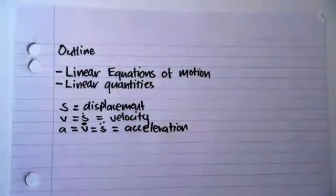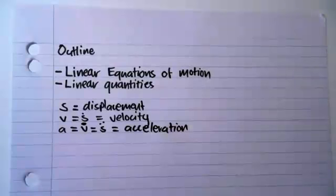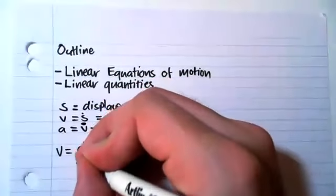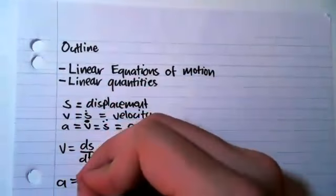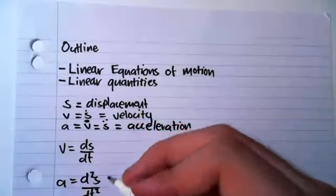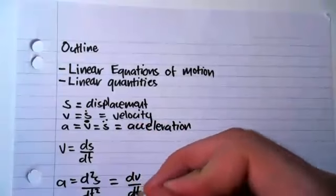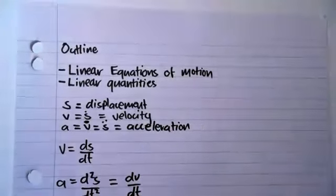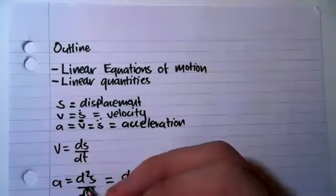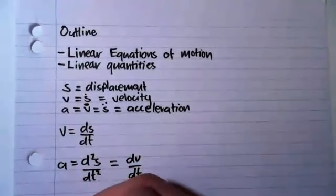Now those can be expressed as differential elements divided by differential elements with respect to time. So we can have V equals dS/dt, A equals d²S/dt², which is also equal to dV/dt, which is very important for deriving our equations of motion. So without further ado, we'll get into our equations of motion. The first one is we'll use this definition here that we've just done. So dV/dt equals A.